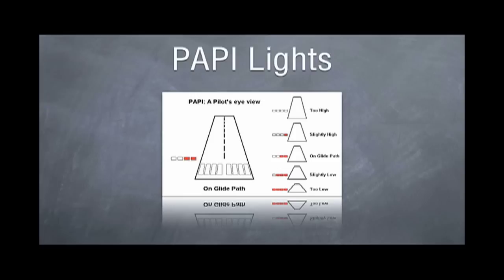The VASI system has a white over red, where the PAPI system just has four lights in a row. So on glide path would be two white and two red in a row.